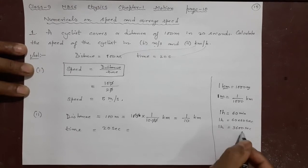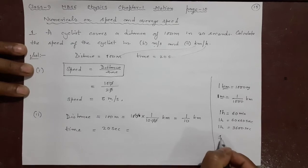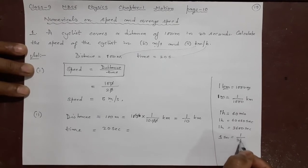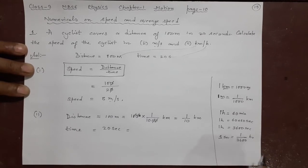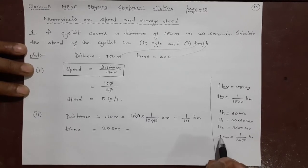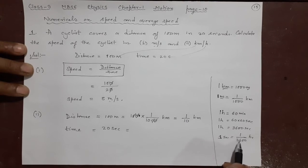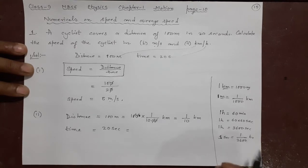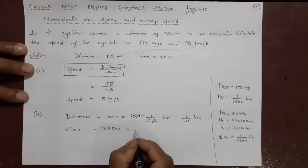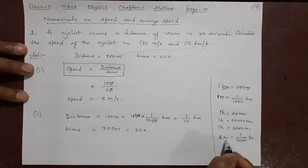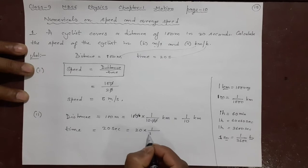1 hour contains 3600 seconds. That means 1 second will contain how much? 1 by 3600 hour. When we write small thing - 1 second is very small but we want to write in hours - that means I have to make that 1 very very small. 3600 pieces I have to cut the 1, then 1 hour will give me 1 second. So now, 20 seconds converting into hours: 20 into 1 by 3600.